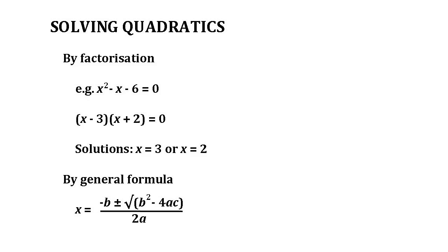If the quadratic doesn't factorize easily, we can use the general formula for solving quadratics: x equals minus b, plus or minus the square root of b squared minus 4ac, all over 2a, and just plug in the values for a, b, and c.